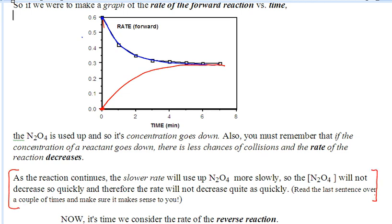This sentence right here is almost embarrassing to type out, but that's what's going on. As the reaction continues, the slower rate will use up N2O4 more slowly. So the N2O4 will not decrease so quickly, and therefore the rate will not decrease quite as quickly. That's pathetic. I can't believe I've actually typed it out in my notes. But that's kind of what happens.